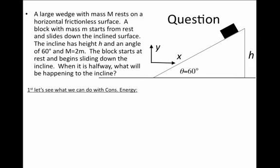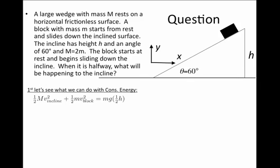Let's see what we can do with conservation of energy. As an object falls, it exchanges potential energy to make kinetic energy, and that will be true here as well. Initially, if there's a potential energy of mg times half of h exchanged to make kinetic energy, that makes kinetic energy of not only the block itself, but of the incline. So we must write: one-half times capital M times v-incline squared plus one-half times the mass of the block times the velocity of the block squared equals the mass of the block times g times one-half h.